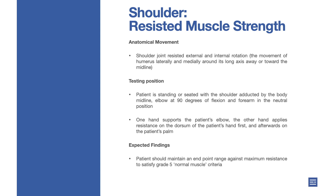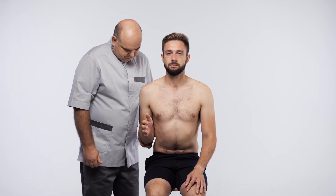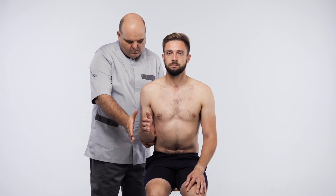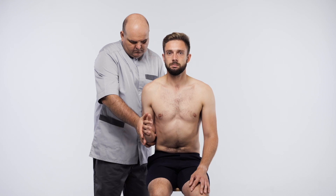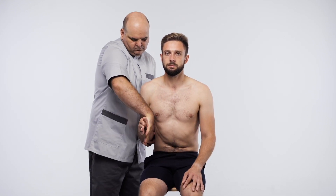Testing position: patient is standing or seated with the shoulder adducted by the body midline, elbow at 90 degrees of flexion, and forearm in the neutral position. One hand supports the patient's elbow; the other hand applies resistance on the dorsum of the patient's hand first, and afterwards on the patient's palm. Expected findings: patient should maintain an end-point range against maximum resistance to satisfy grade 5 normal muscle criteria.